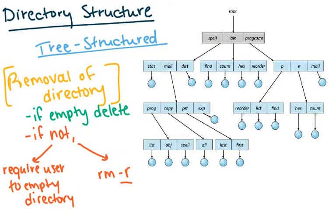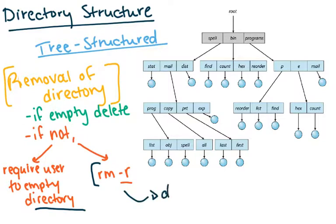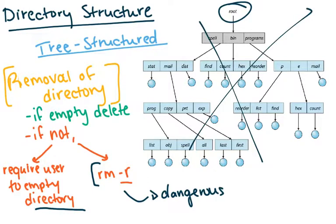First thing to think about with tree structure is removal of a directory. If it's empty, you can just delete it. If not, you can go one of two paths: you can require the user to empty the directory before deleting it, or — more commonly — there's built-in functionality in Linux and Unix to remove a directory recursively. The remove -r command will let you recursively remove everything in it, even if it has content. This can be very dangerous, especially if executed at the top level — you could essentially delete everything.